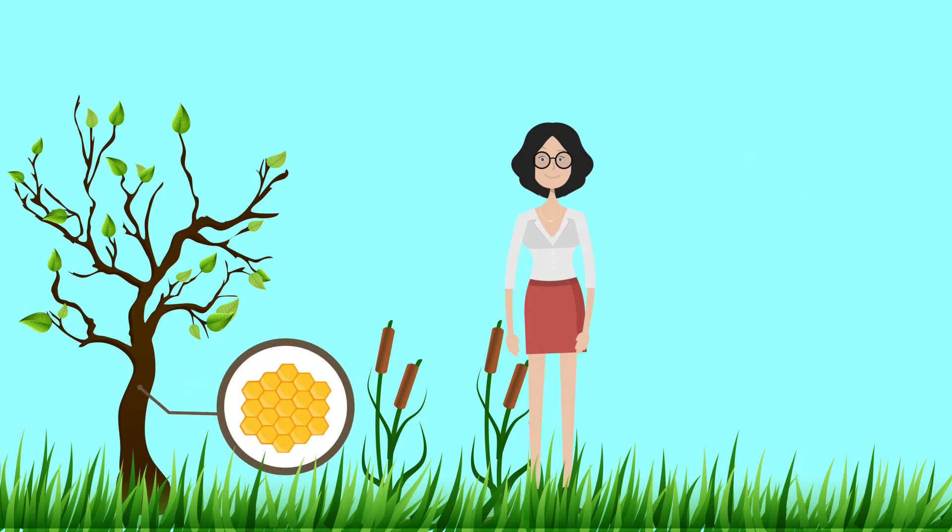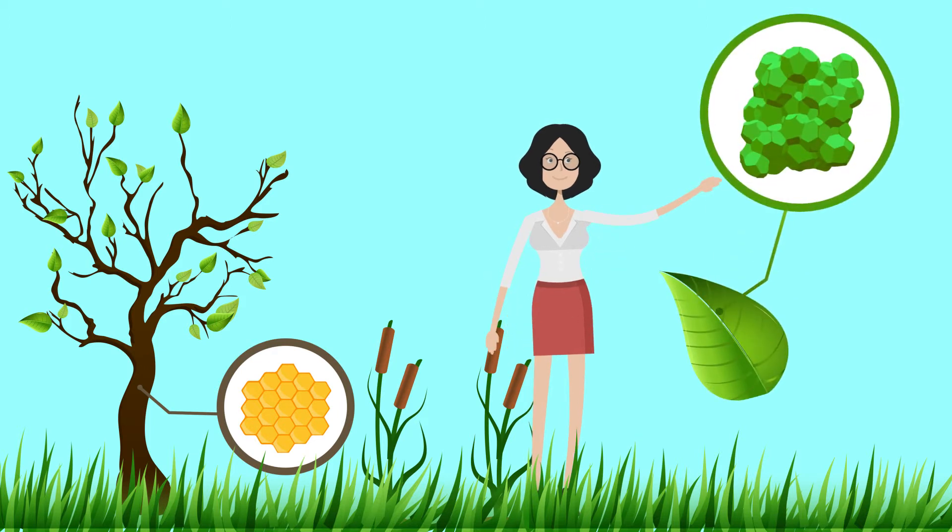For example, the honeycomb-like microstructures of wood and cork and the polyhedral cell structure found in plant stems give a good performance index for resisting bending and buckling.